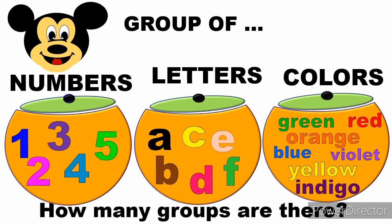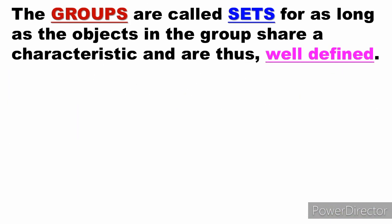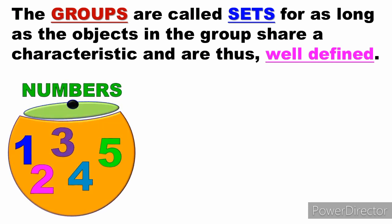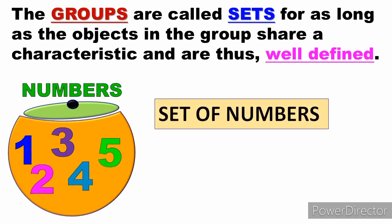These groups are called sets, as long as the objects in the group share a characteristic and are thus well-defined. A group becomes a set only when it is well-defined — meaning what is included is specific and clear.